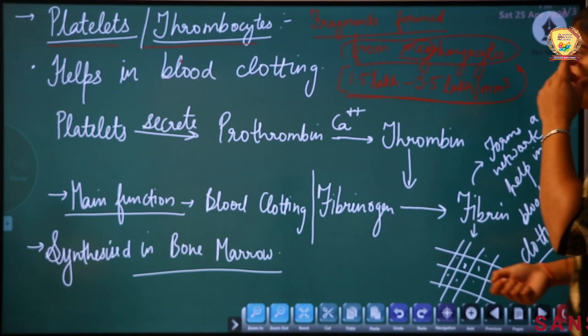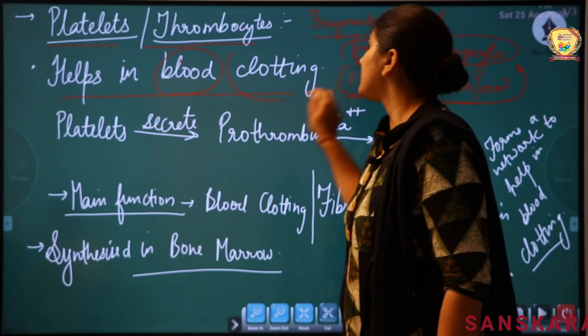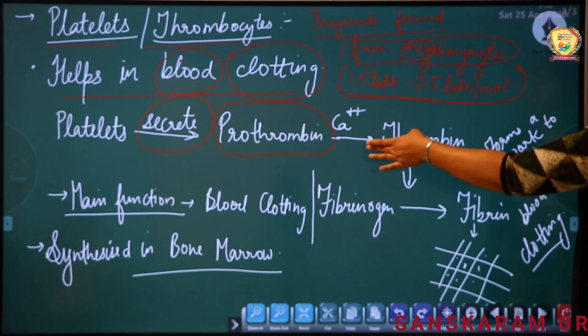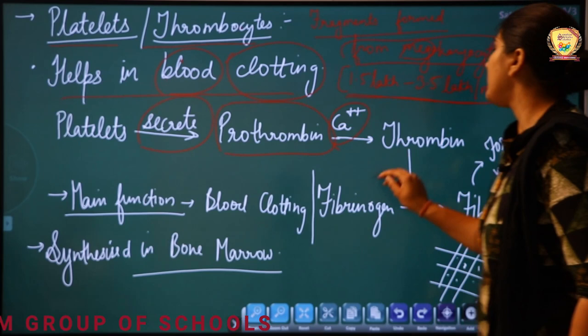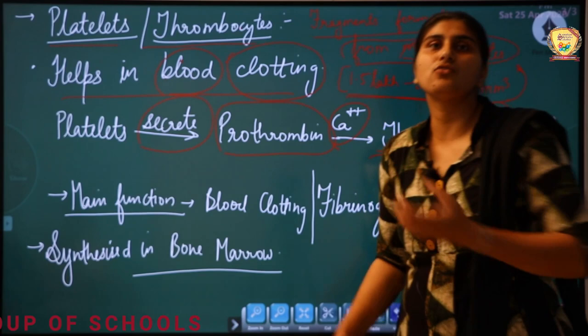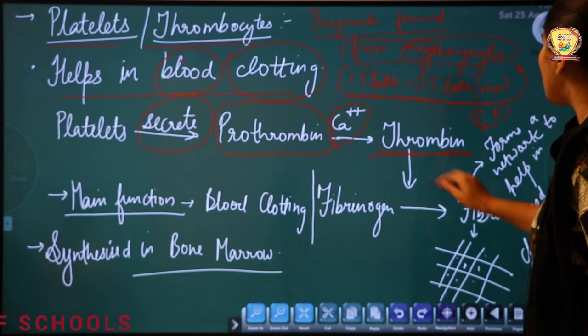Now talking about the function of platelets. Platelets help in blood clotting. Platelets secrete prothrombin enzyme. This prothrombin, in the presence of calcium ions, gets converted into thrombin. These are clotting factors — if you remove clotting factors from plasma, it becomes serum. There are 13 types of clotting factors, all associated with blood clotting. Thrombin then converts fibrinogen (a protein present in plasma) into its active form fibrin.